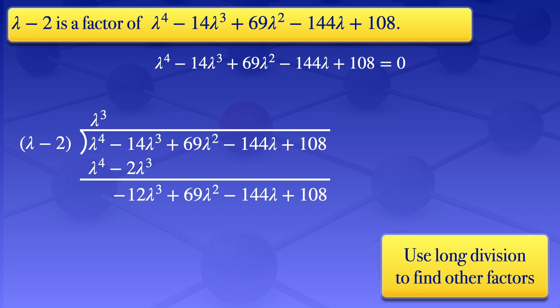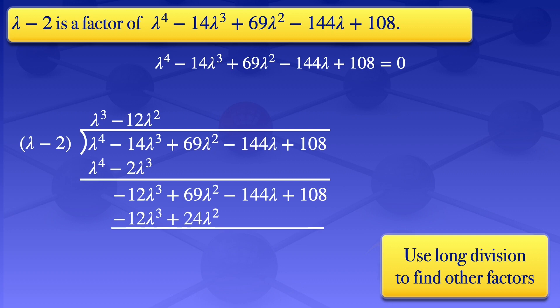The leading term is now -12λ³. Dividing by λ gives -12λ², which we write on top. Multiplying -12λ² by (λ - 2) gives -12λ³ + 24λ². Subtracting: -12λ³ - (-12λ³) = 0, and 69λ² - 24λ² = 45λ². The new expression is 45λ² - 144λ + 108.